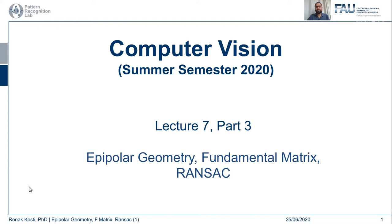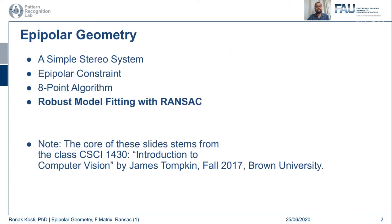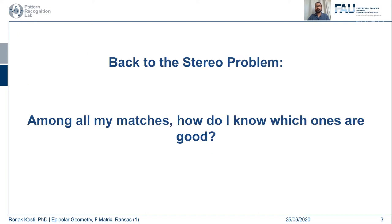Hello everyone and welcome back to the computer vision lecture series. This is lecture 7, part 3. In this lecture, we are going to continue talking about solutions to model fitting for inliers and outliers. We are specifically going to look into Hough transforms and RANSAC, but before we go there,